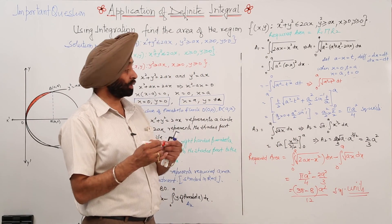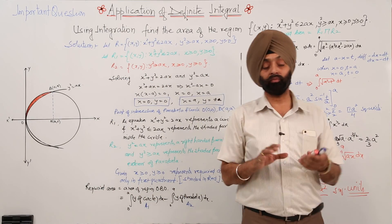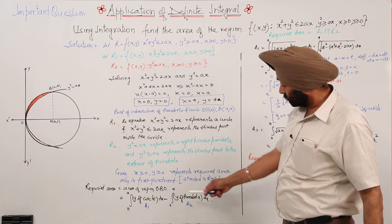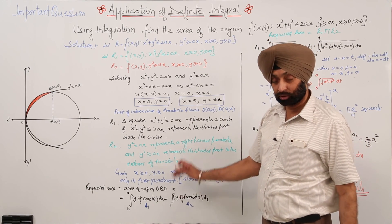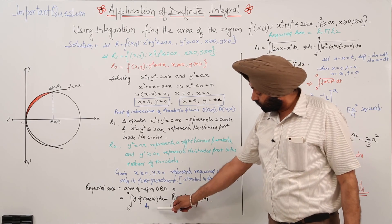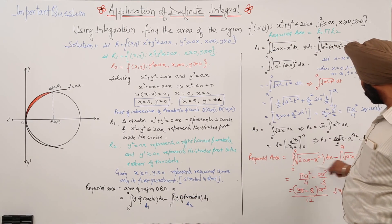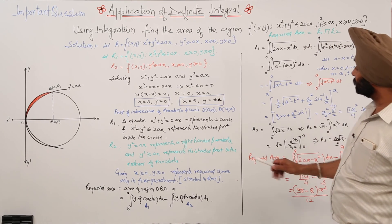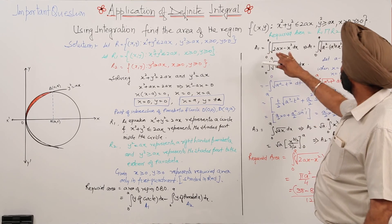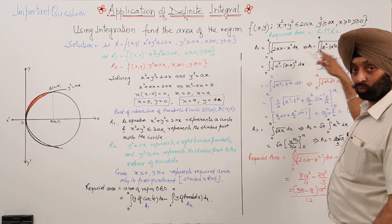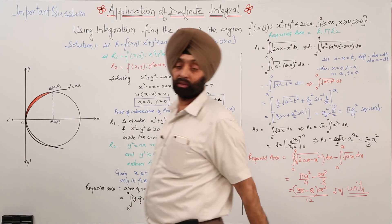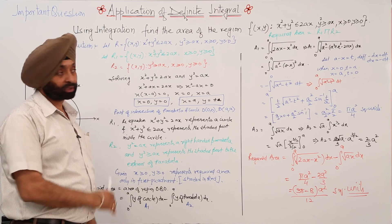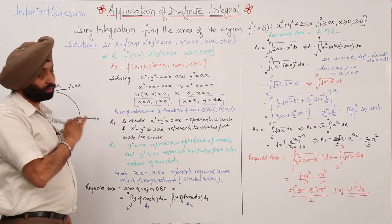To summarize: the key steps were identifying R1 and R2, finding intersection points, setting up the integral as A1 minus A2, using the substitution t = a - x for A1, and applying the standard formula. One step regarding R1 ∩ R2 should be written explicitly where 'required area' is first mentioned. The solution is otherwise complete and correct.